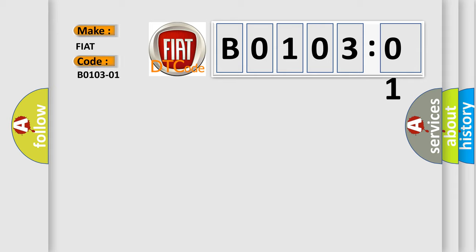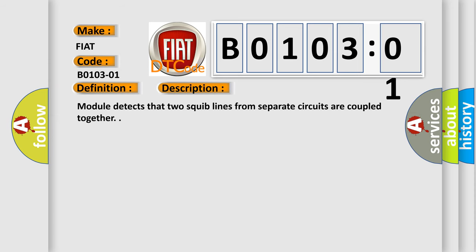The basic definition is: front driver airbag first stage, general electrical failure. And now this is a short description of this DTC code. Module detects that two squib lines from separate circuits are coupled together.